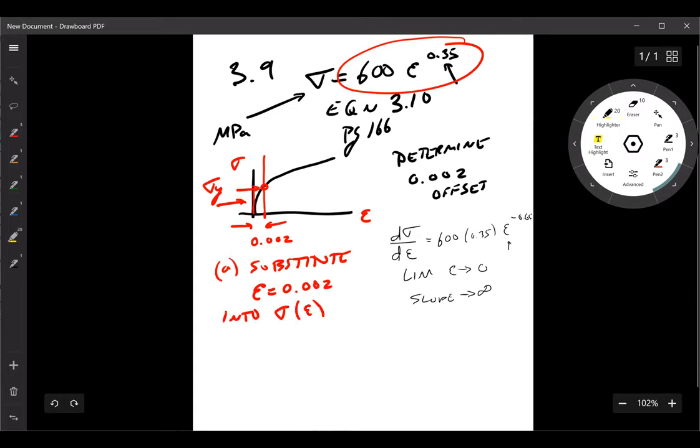So part A of this problem is substitute epsilon equals 0.002 into sigma as a function of stress given above. Okay, now let's look at what the next part of the problem asks.